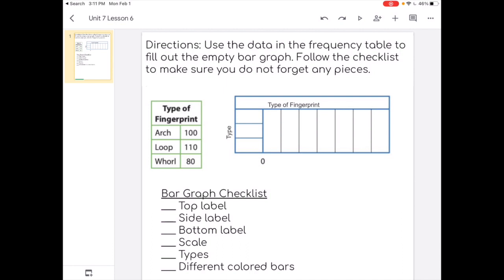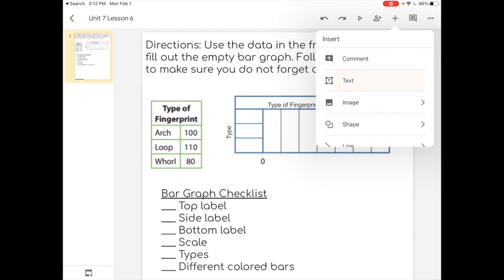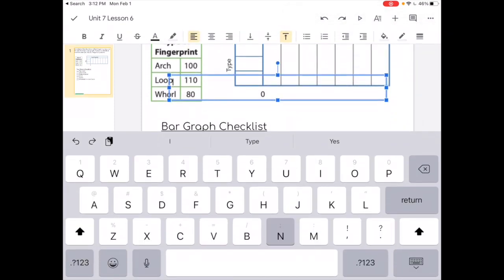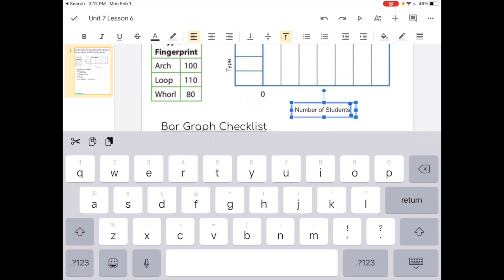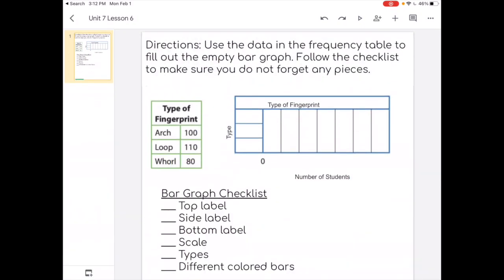Now let's do my bottom label. This is number of students. Make it smaller. Make it fit and then move it to the bottom. So I've done my three labels.